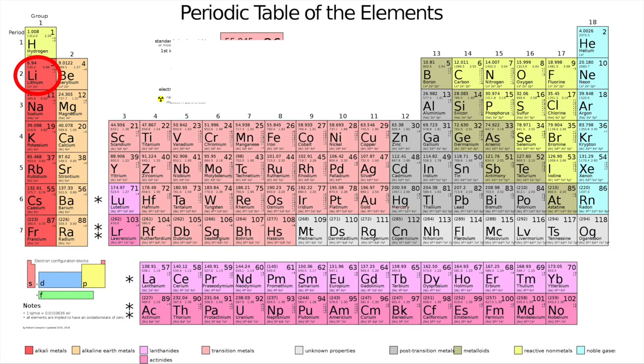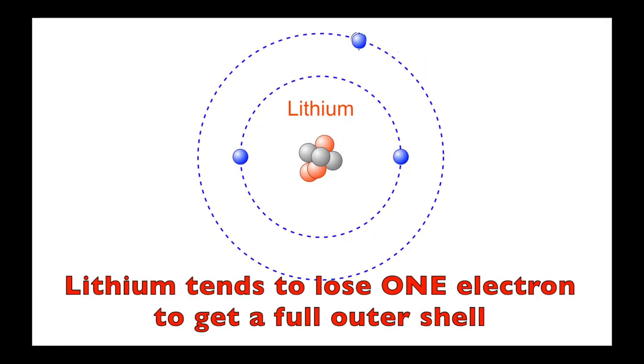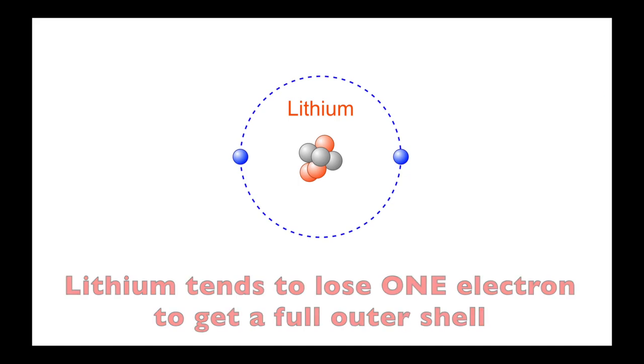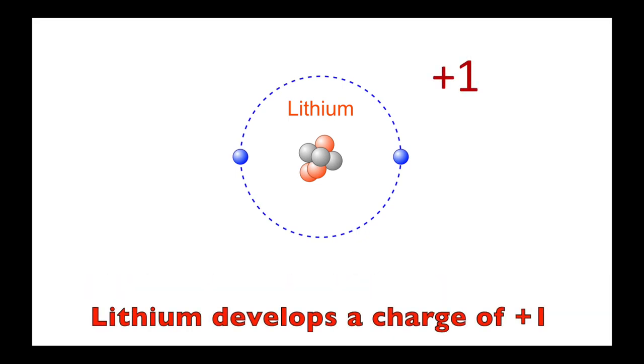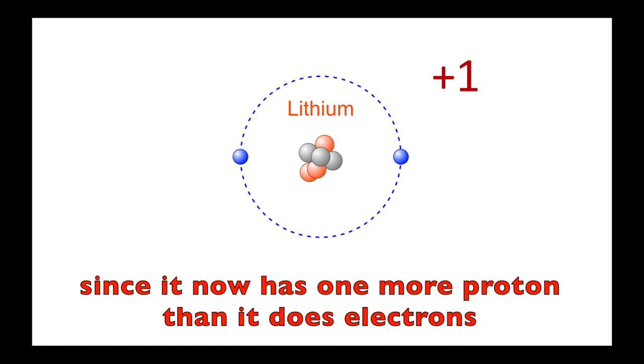Let's look at the first row of the periodic table for some examples. Lithium tends to lose one electron to get a full outer shell. Lithium loses its entire second electron shell. Lithium develops a charge of plus one, since it now has one more proton than it does electrons.